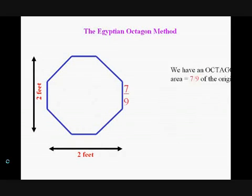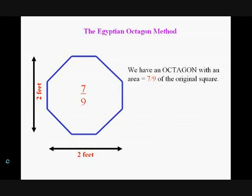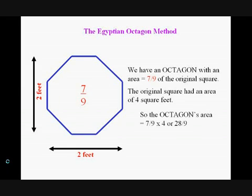We have an octagon with an area equal to 7 ninths of the original square. The original square had an area of 4 square feet, so the octagon's area must be 7 ninths multiplied by 4, or 28 ninths.